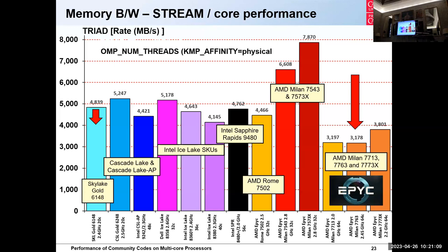Going back to the Sky Lake system, the per-process bandwidth is 4.8 GB/s and it just does not improve. The 7573X with its additional cache looks a lot better. But the 128-core 7713 and 7763 numbers are dreadful — after five years you've effectively gone down by 25% in terms of effective memory bandwidth per process. That's not good.